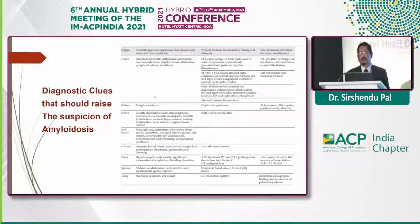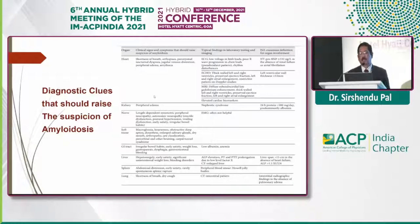Diagnostic clues for cardiac involvement: the ECG may show low-voltage complexes or pseudo-infarction pattern in chest leads; BNP would be more than 332 nanograms per liter. Echo shows thickened left and right atria as well as thickened left and right ventricles — left ventricular thickness more than 12 mm. MRI shows diffuse subendocardial late gadolinium enhancement.